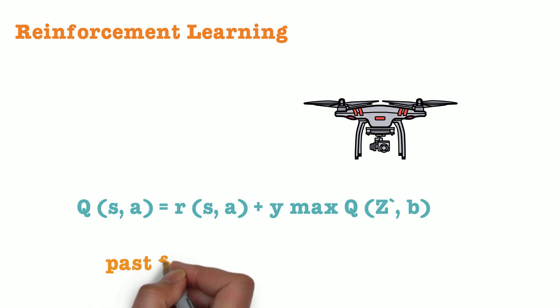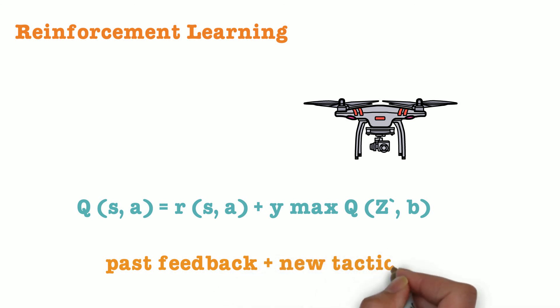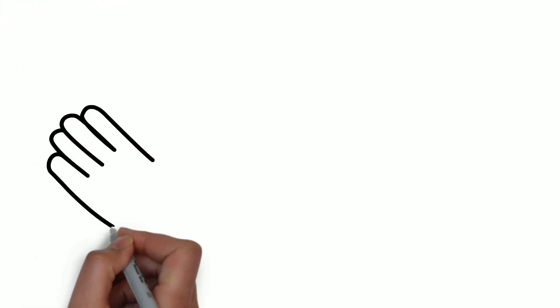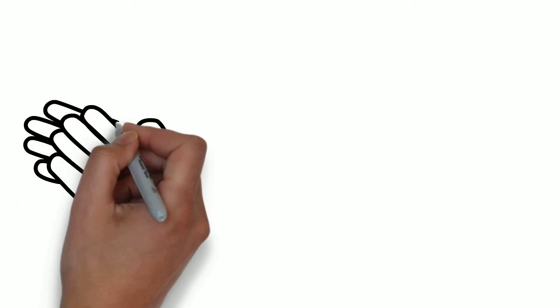In reinforcement learning, the algorithm uses past feedback and explores new tactics to maximize the final payoff. This is akin to how we modify the behavior of kids through carrot and stick method. If you have come this far, you really need an applause.